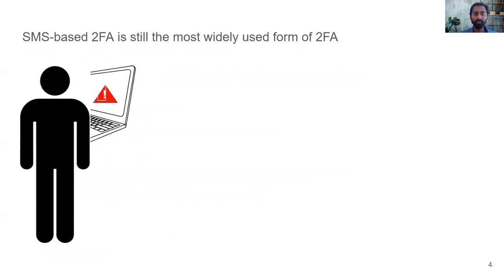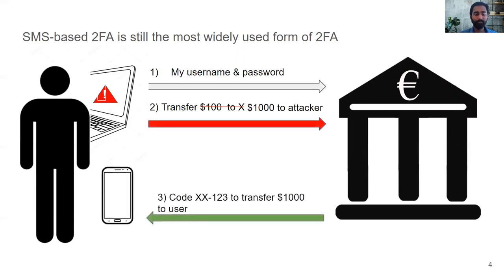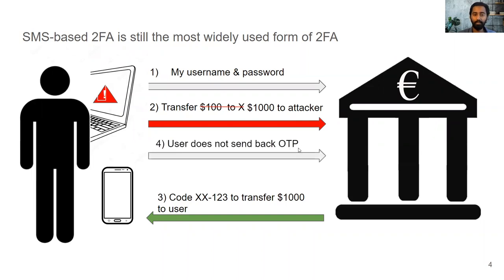Today, the most widely used form of two-factor authentication is SMS-based two-factor. Let's see how SMS-based two-factor can protect a transaction even if the user is making the transaction from a compromised device. The user authenticates to the bank and issues a transaction. Unfortunately, an attacker hijacks the transaction and changes the details to move money to the attacker's account. Luckily, the user had enabled SMS-based two-factor, so the bank generates a transaction authorization code and sends that code along with the transaction details to the user's mobile phone as an SMS. The user sees the transaction details are wrong, so they cancel the transaction by not sending back the OTP.